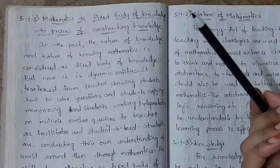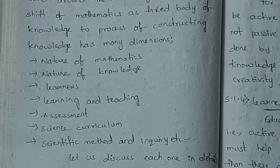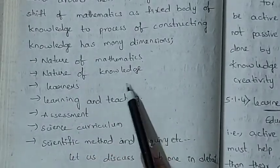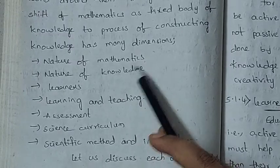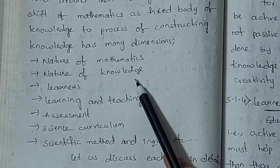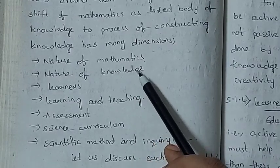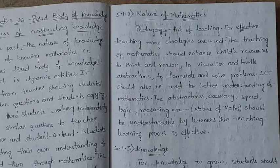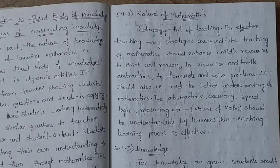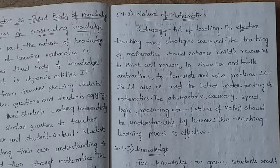This constructing knowledge has many dimensions. Those dimensions are: nature of mathematics, nature of knowledge, learners, learning and teaching, assessment, science curriculum, and scientific method and inquiry. We need to have an idea of topics like nature of mathematics, history of mathematics, aims of mathematics, and learning objectives of mathematics.